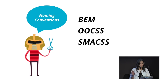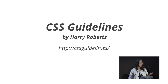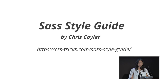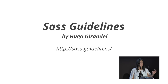I have some resources to share for coming up with a coding style guide. The first is CSS Guidelines by Harry Roberts — some really amazing recommendations. If you're writing Sass, there's also a Sass style guide written by Chris Coyier. My personal favorite is Sass Guidelines by Hugo Giraudel — I like it most because he includes further reading explaining why he recommends certain things in specific ways.